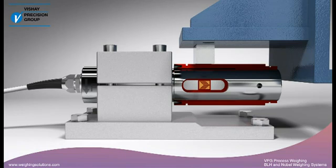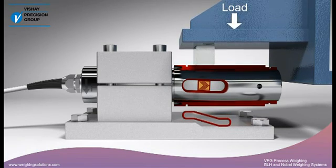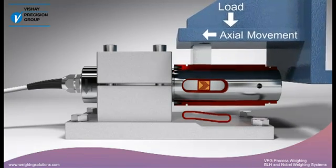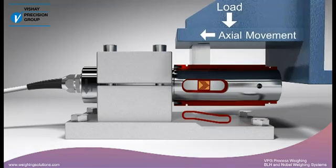It allows the loads to be applied in line with the strain gauges. The measuring element deforms symmetrically, leaving the strain gauges unaffected by bending movement errors.